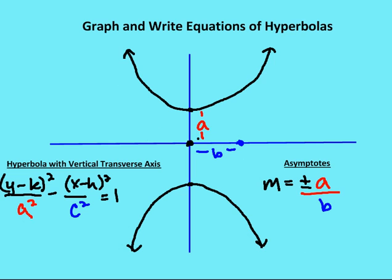The other equation is based on a transverse axis which is vertical — two branches of the hyperbola going up and down. In this case, it's (y minus k) squared over a squared, minus (x minus h) squared over b squared, is equal to one. Where a, again, is just the distance between the center of the hyperbola and the vertices. In this case I'm running along the y-axis, but in all cases I'm running along the transverse axis.